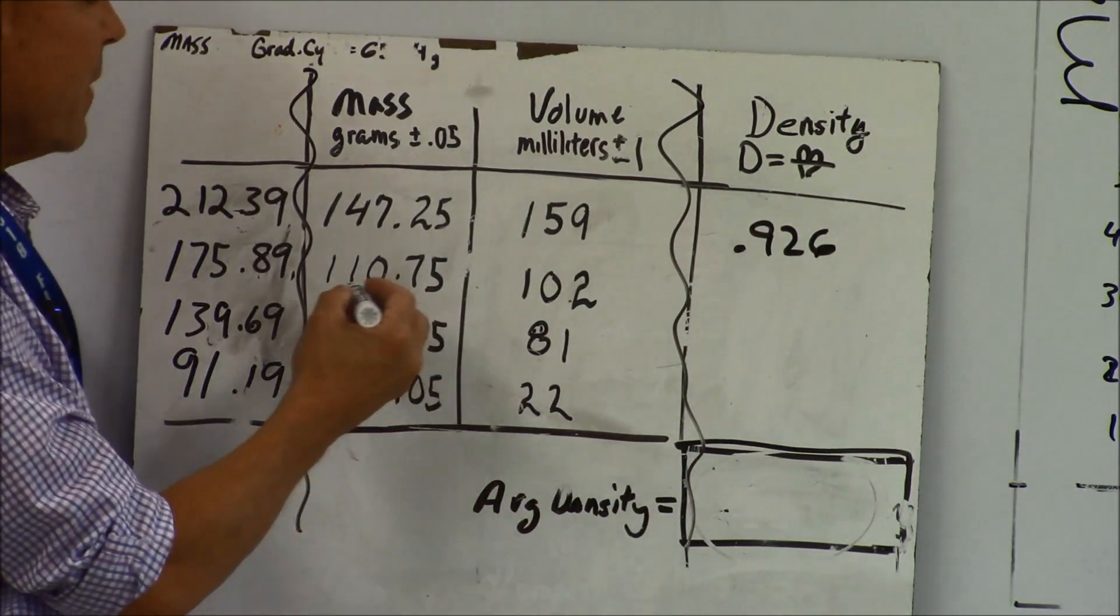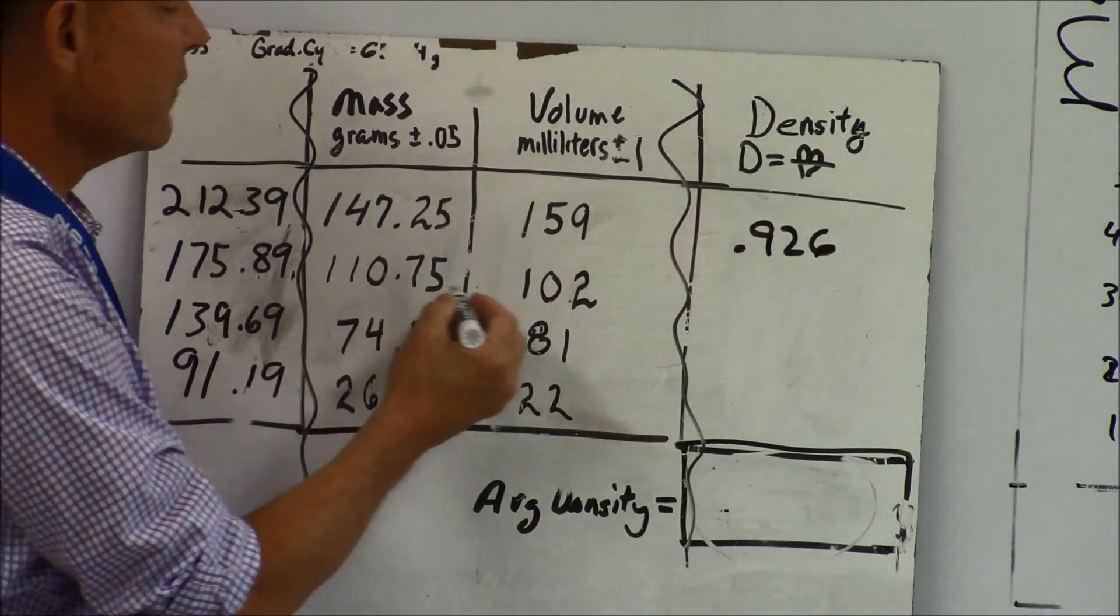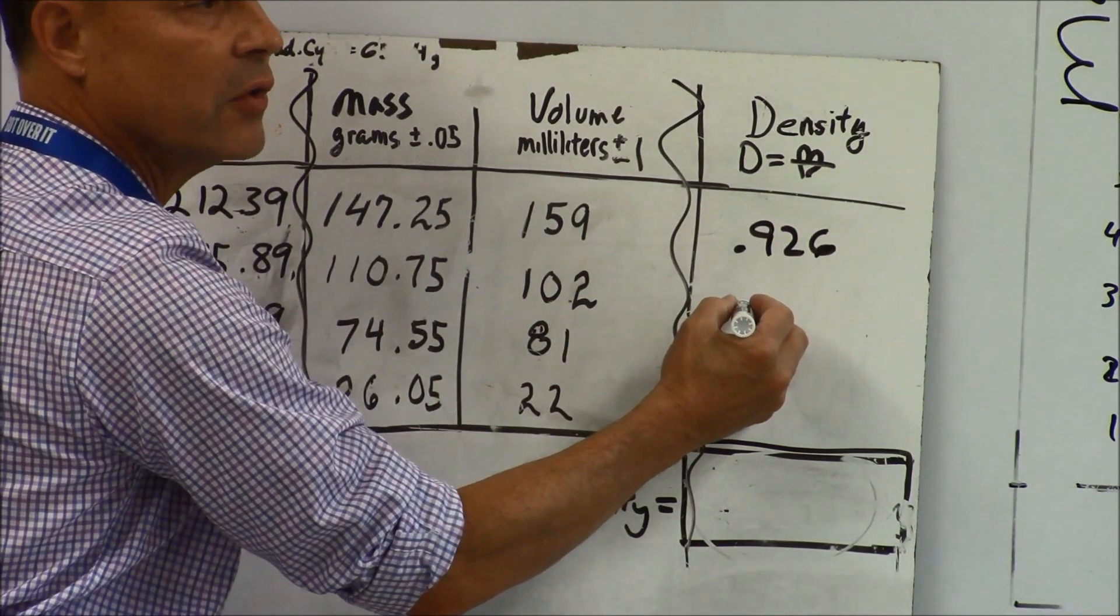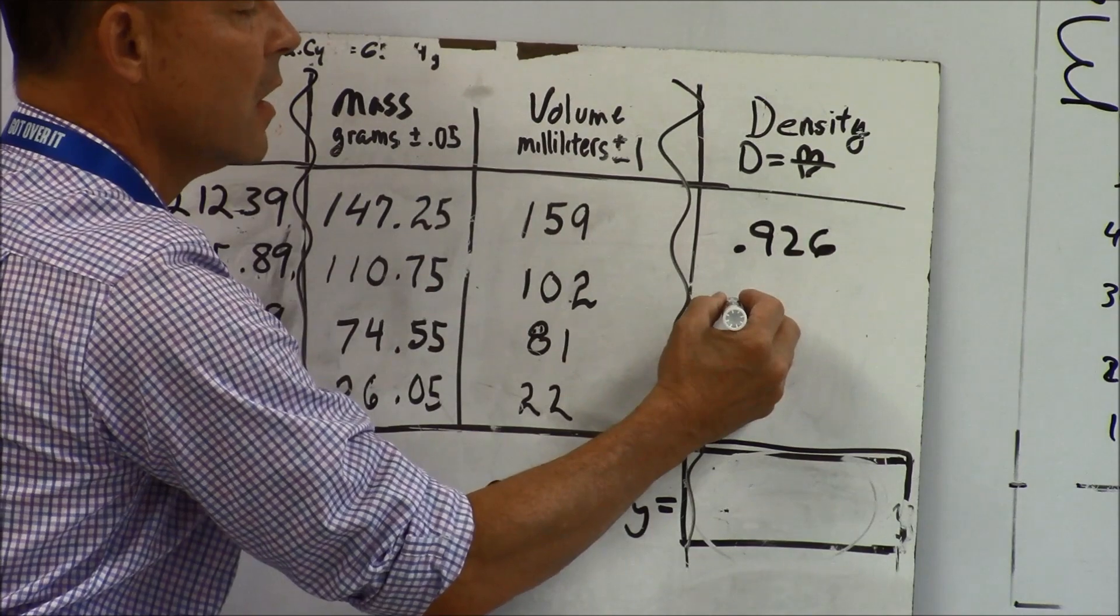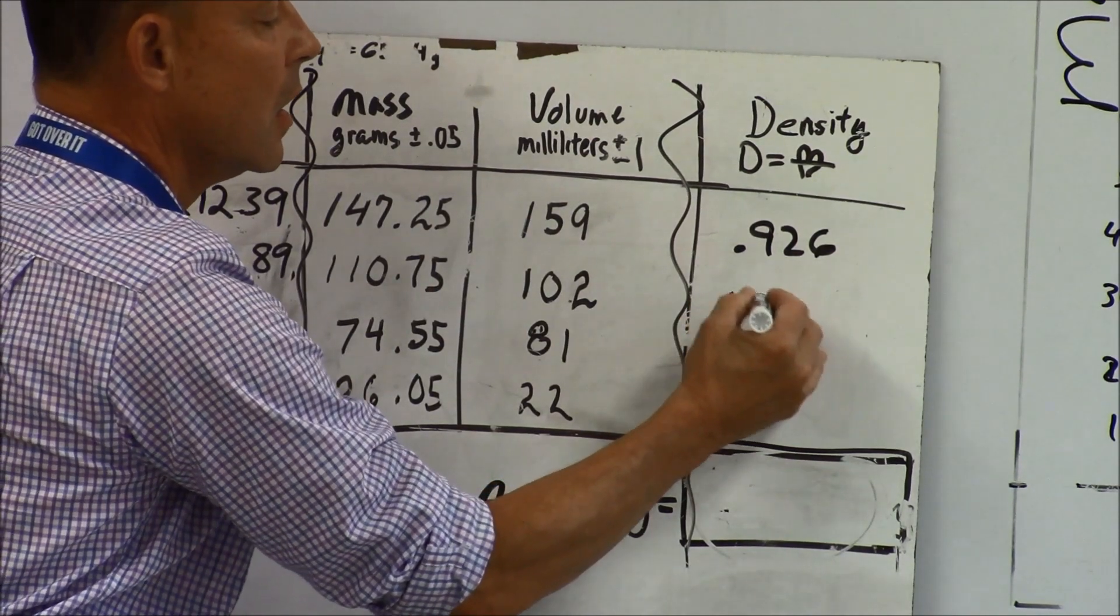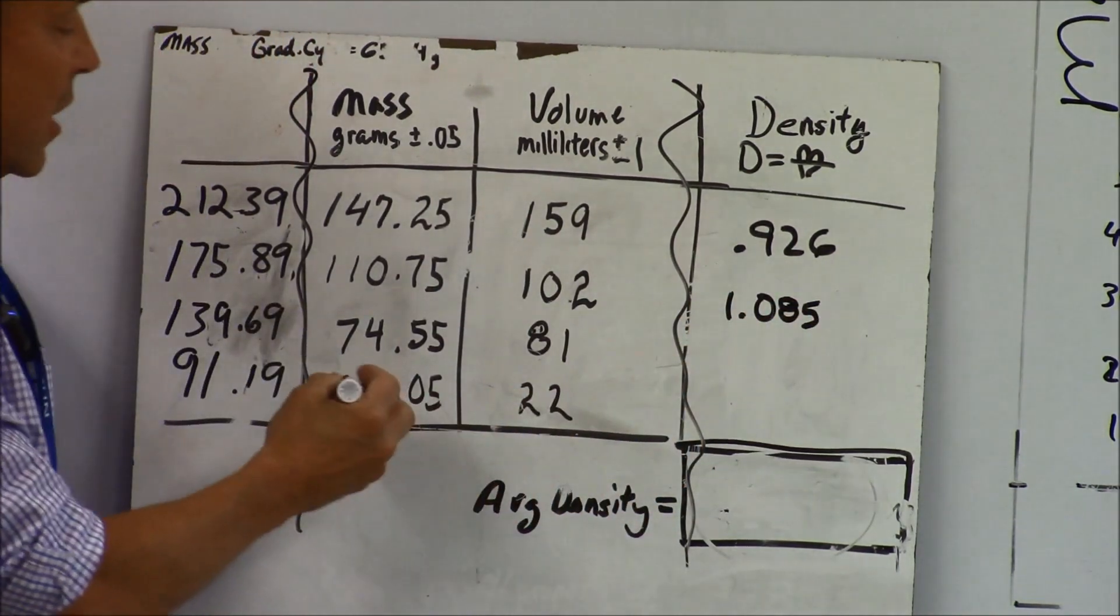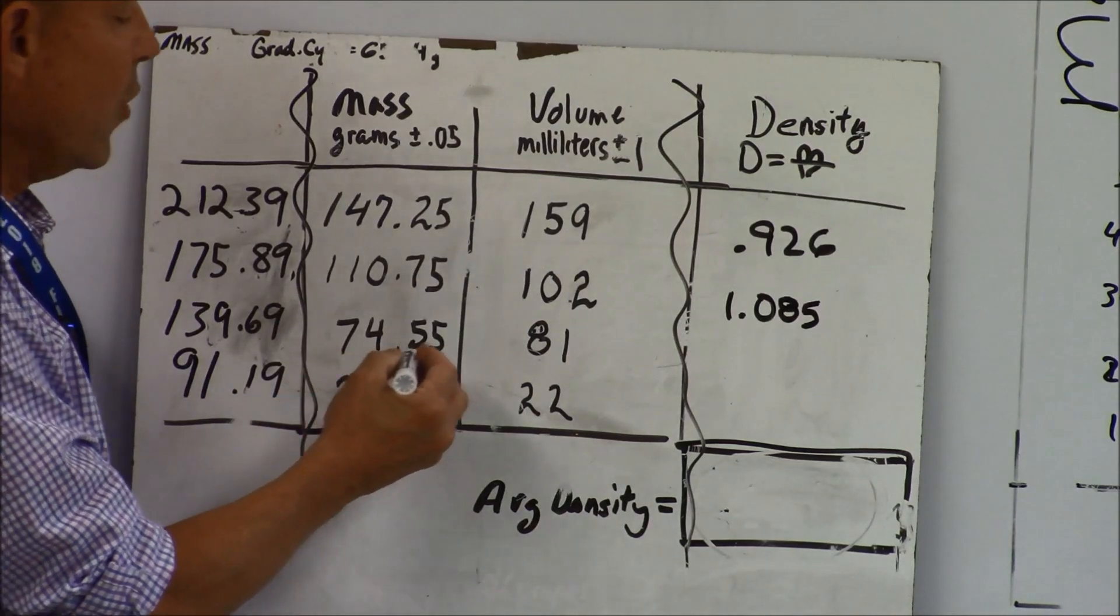Okay, what about this one? 110.75 divided by 102, what'd you get there Dominic? One point oh eight five. And then what do you get when you divide 74.55 by 81, Anthony? Point nine two.